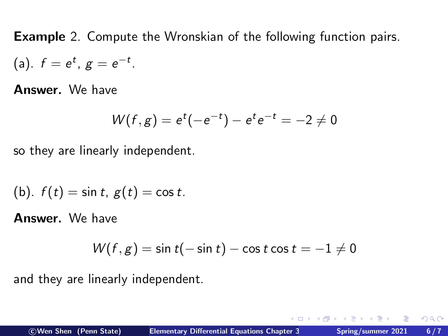The next pair: f equals sine t, g equals cosine t. Computing the Wronskian: f times g prime gives sine t times negative sine t, and minus f prime times g gives minus cosine t times cosine t. So we get negative sine squared t minus cosine squared t, which equals negative 1. Since it's not zero, sine and cosine are linearly independent functions.